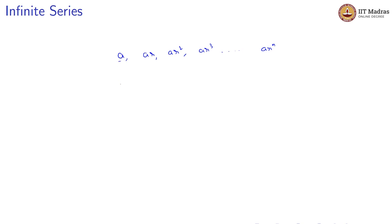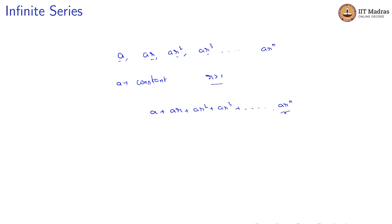If you look at the value of r — if r is greater than 1, then this series will never be converging. The value of a + ar + ar² + ar³ + ... will be increasing as the number of terms increases. Since r is greater than 1, the value will be becoming bigger and bigger. If a is greater than 1 and r is greater than 1, then it will be leading to plus infinity.